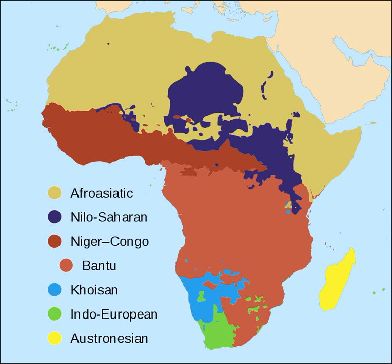Tonal languages are found throughout the world but are predominantly used in Africa. Both the Nilo-Saharan and the Khoisan phyla are fully tonal. The large majority of Niger-Congo languages is also tonal. Tonal languages are also found in the Omotic, Chadic and South and East Cushitic branches of Afroasiatic. The most common type of tonal system opposes two tone levels, high and low. Contour tones do occur and can often be analyzed as two or more tones in succession on a single syllable. Tonal sandhi processes like tone spread, tone shift, downstep and downdrift are common in African languages.